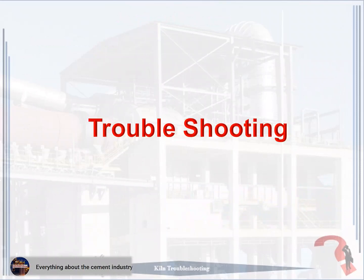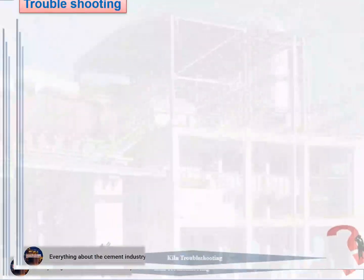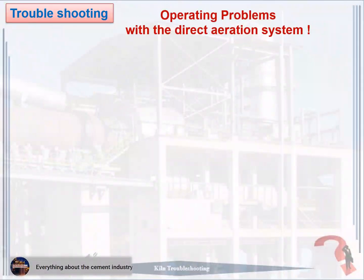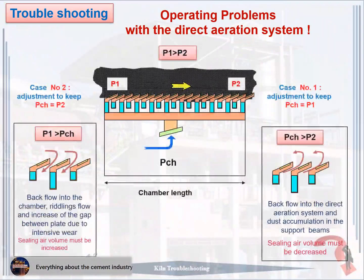Troubleshooting. We will explain the problems that occur inside the cooler, what causes them, and their solution. Problem 1: Operating problems with the direct aeration system. Case 1: PCH greater than P2 — backflow into the direct aeration system and dust accumulation in the support beams. Cooling air volume must be decreased.